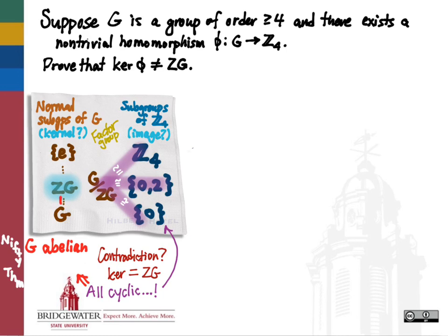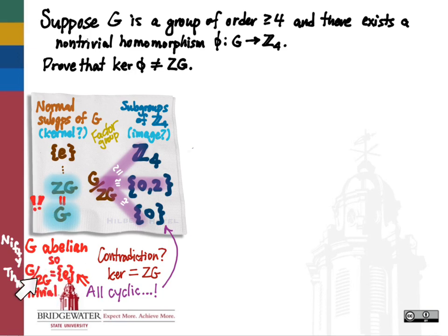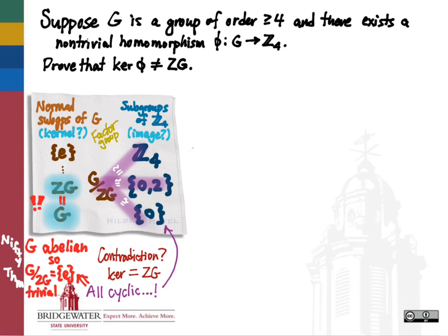If g is an abelian group, the center of g must consist of all of g, since every element commutes with every other element. Therefore, the normal subgroup which is the center of g and the normal subgroup which is all of g are the same thing. So g mod Z(g) — the factor group of g by its center — is the factor group of g by itself, which is a trivial group. Since this factor group is isomorphic to the image of the homomorphism by the first isomorphism theorem, the image must also be trivial.